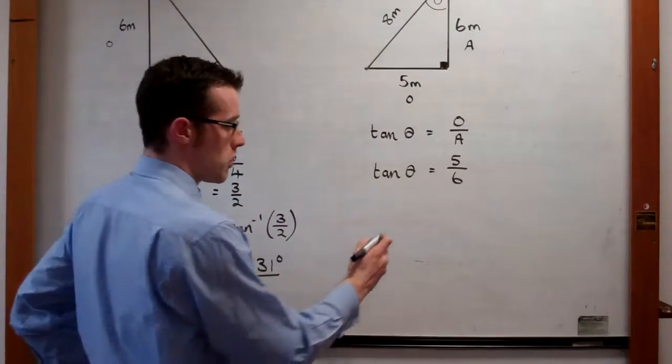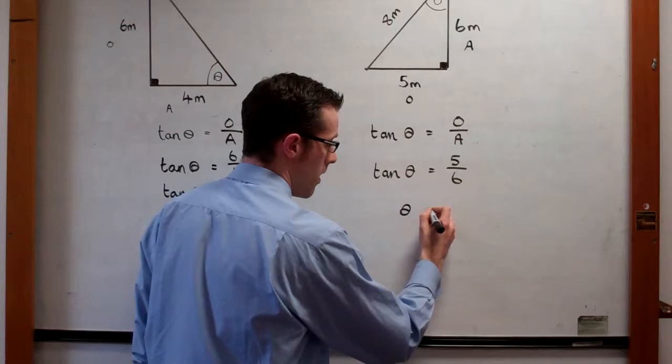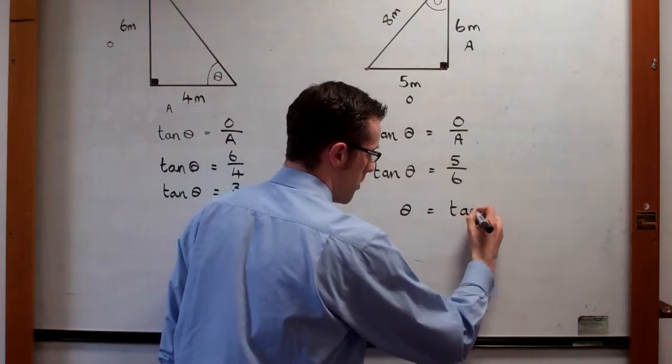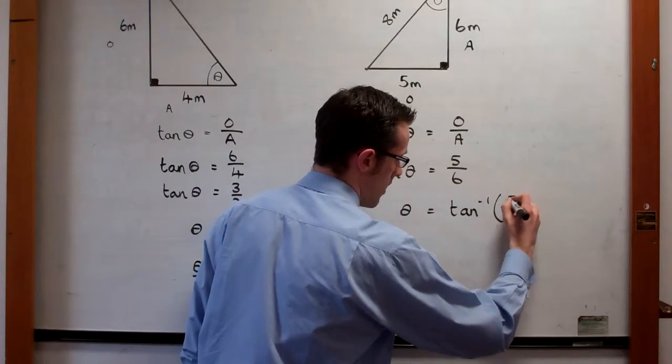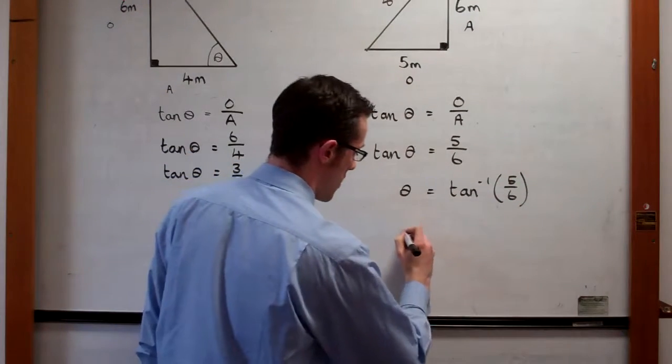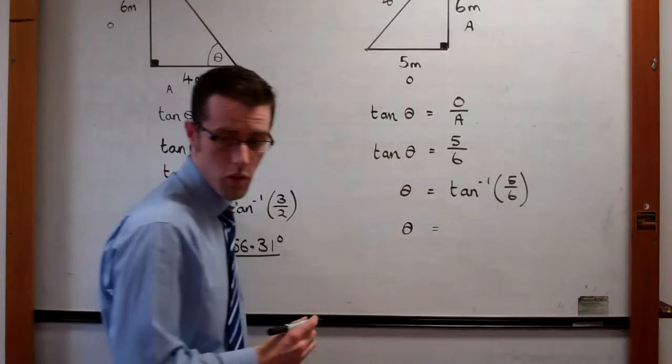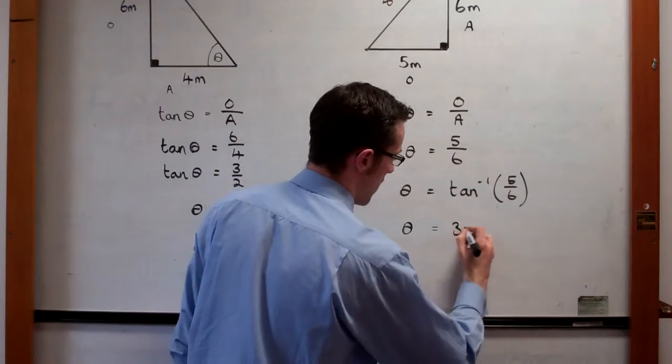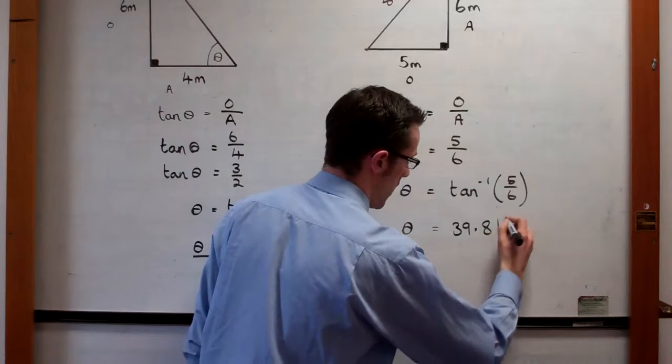This fraction can't be simplified anymore, so we move straight away to pressing shift tan. So we press shift tan, 5 over 6. Then our answer for theta, the angle that we're looking for, is 39.81 degrees.